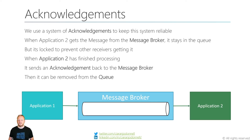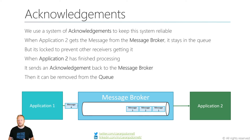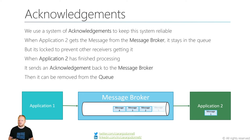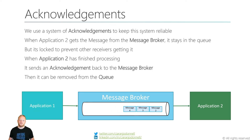We use a system like this which we call acknowledgements to keep our messaging systems reliable. When application two gets a message from the broker it actually stays in the queue. The message gets locked so other receivers don't also get a copy of that message. When application two finishes processing the message, here we see it generates an acknowledgement which it sends back to the message broker, and that enables the message broker to remove that message from the queue and effectively move all the other messages forward.